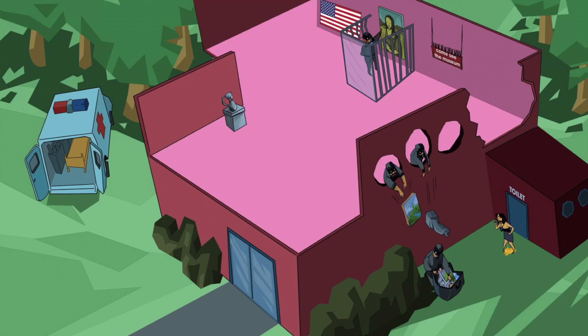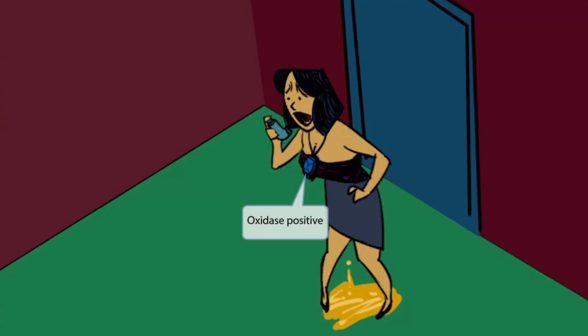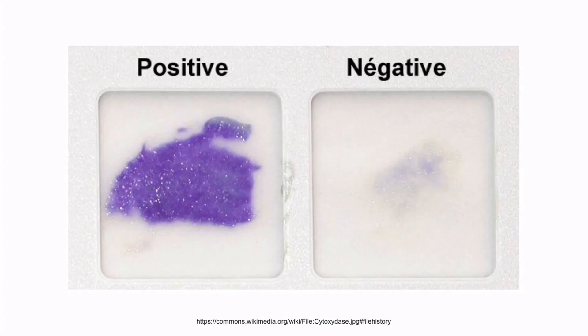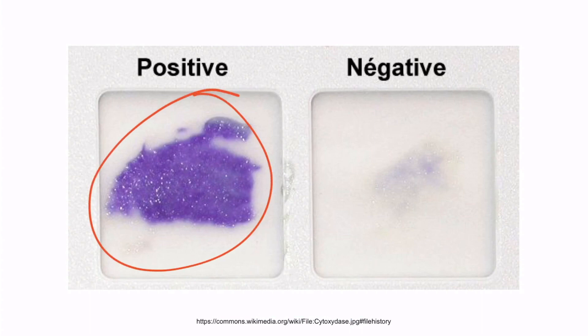A woman who just came out of the restroom noticed the robbers. Notice that she's wearing a blue necklace — just like in our other videos, this is here to help you remember that Pseudomonas is oxidase positive. This is an image of the oxidase test, which we covered in section 20, our Neisseria overview video. Recall that if the organism is oxidase positive, the disc will turn a blue or purple color. So remember, Pseudomonas is oxidase positive.